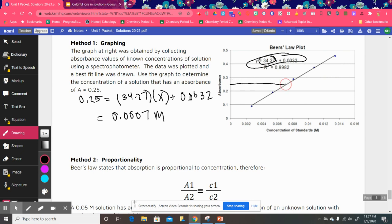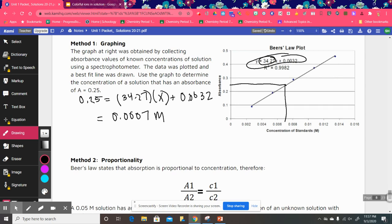And if we look here on the line, that makes sense, because here would be around 0.25. And if we were just going to go over here and then drop this down, it would be about in between 0.006 and 0.008. So we can use that best fit line to help figure out the concentration of an unknown solution.